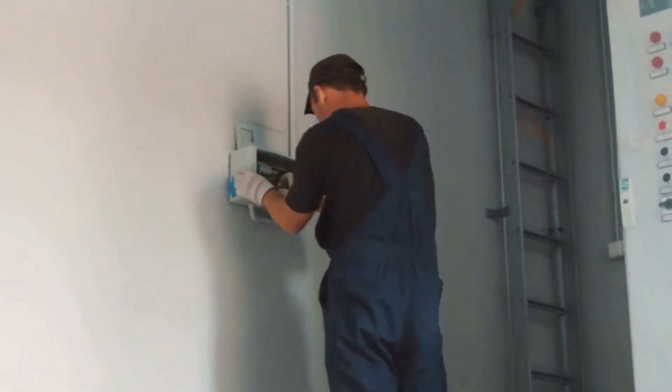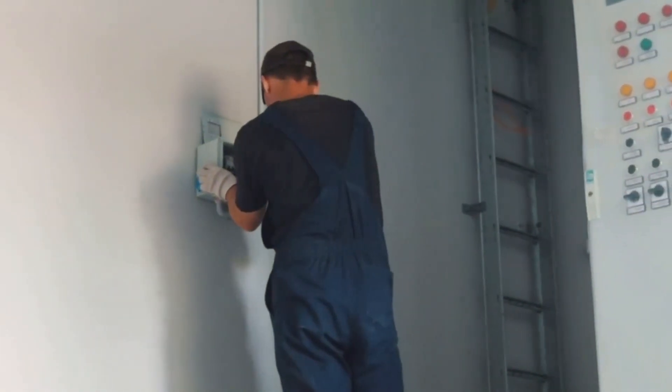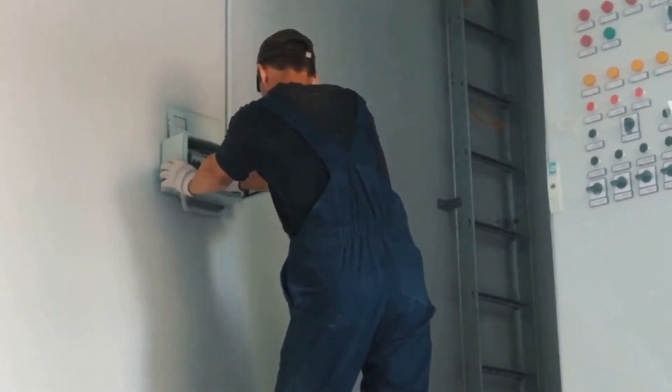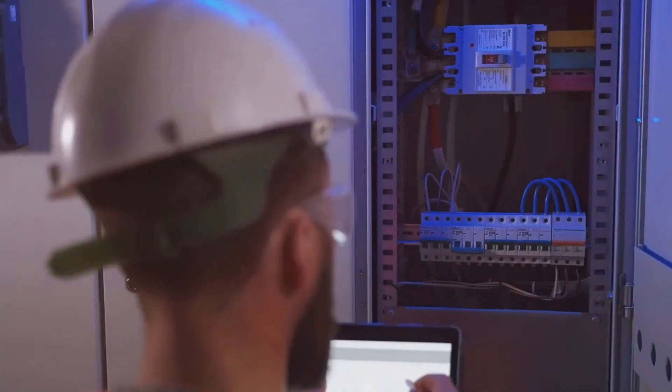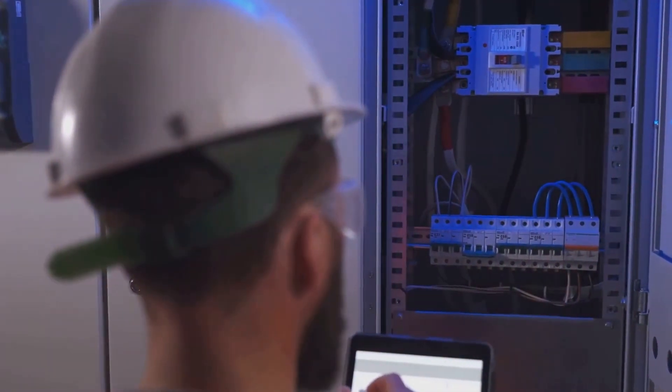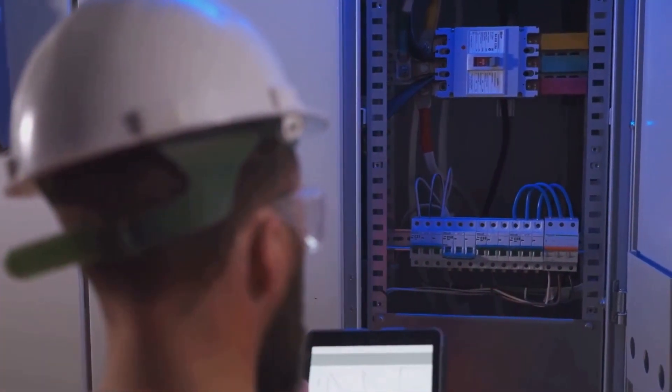In essence, both ELCB and RCCB play critical roles in safeguarding against electrical hazards. While ELCB offers protection against earth leakage currents, RCCB provides a more extensive shield protecting against both earth leakage and residual currents.